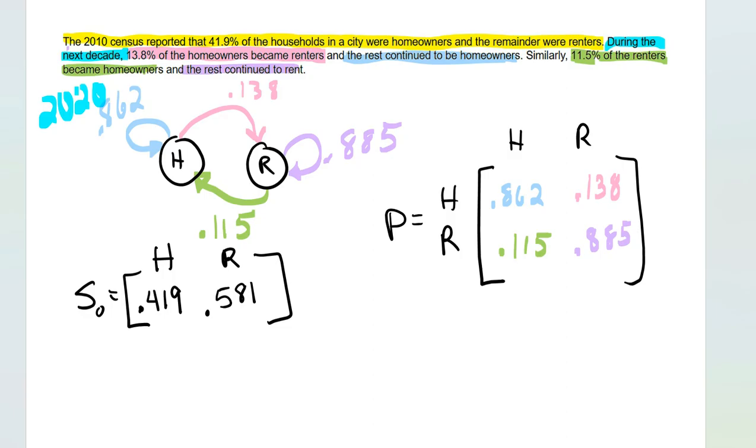And so, this over here is my P, and then it says, in the next decade, is that 10 years later or one year later? I'm just going to go with S sub 0 times P, and say P to the 1st is one decade later, because it just says during the next decade. So, we're going to give this a shot. I'm going to pause this for a second while I put this in my calculator.